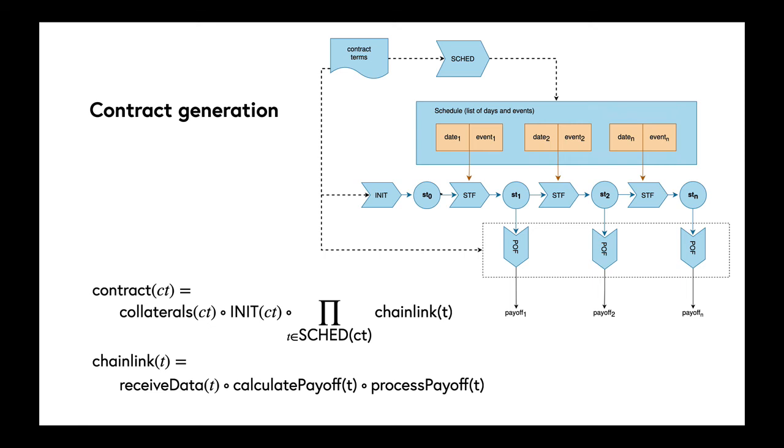What about contract generation? We expose the underlying model. At each point in the schedule, because we build from the contract terms, we're able to build a schedule which describes the points at which significant things happen. From the schedule, we're able to build the contract. That's built by first of all hooking up any collateral in the contract, then initializing the contract, and then iterating through the schedule with this chain link function.